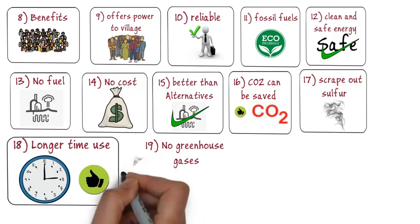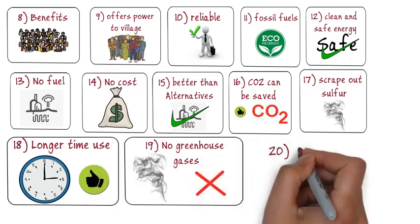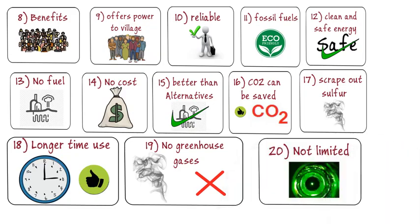Nineteenth is, geothermal energy does not produce greenhouse gases. Twentieth is, energy does not run out.